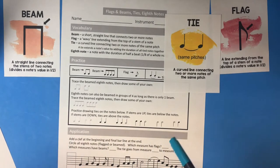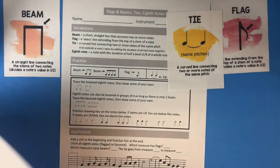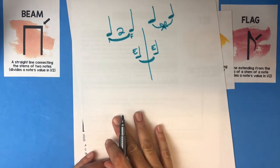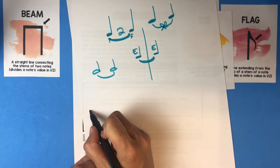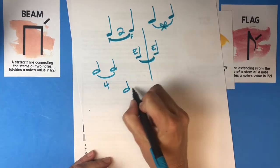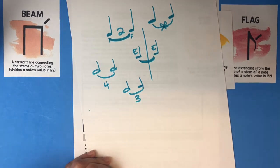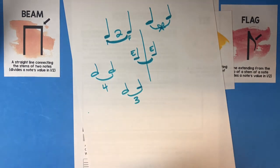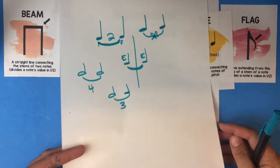A tie is a curved line connecting two or more notes of the same pitch, and it extends the note's value by adding the durations together. A quarter note tied to a quarter note is now worth two beats. A half note tied to a half note is worth four. A half note tied to a quarter note is three beats. The tie is like a plus sign — tying together something worth two beats with something worth one beat gives you three beats.